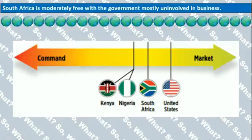South Africa is considered moderately free. The role of the government is relatively uninvolved in business. The government has ended most unnecessary price controls, but there are still some government-run businesses that need to be fixed.